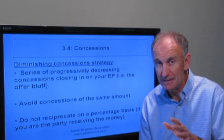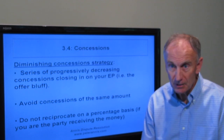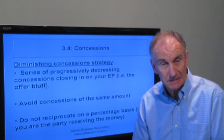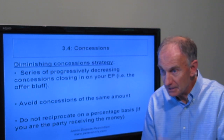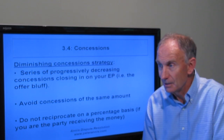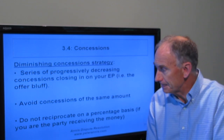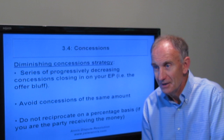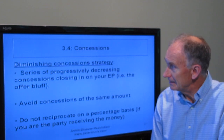Concession bargaining is intended to send a signal. The traditional way it's supposed to be done is with a diminishing amount — you start at 10,000, then 5,000, then 3,000 — and the signal is that you're closing in on your resistance point. If you're bluffing, you're really closing in on your expectation point. If you give the same amount each time, there's no information being exchanged — nobody knows where things are going, and it could go on forever. Generally, diminishing returns is how it's done.